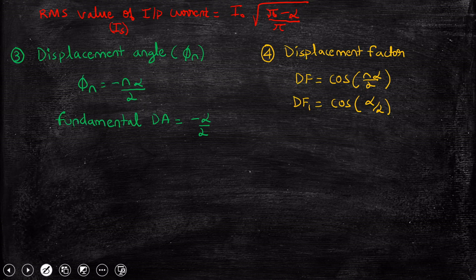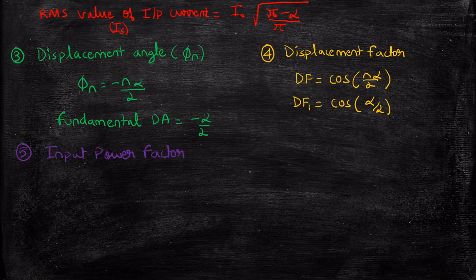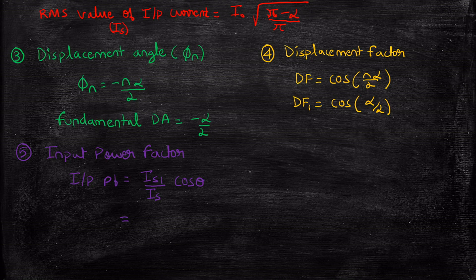Next is the input power factor. By definition, input power factor = (I_s1 / I_s) · cos(θ), where θ is the displacement angle. Substituting the expressions for I_s1 and I_s, and cos(α/2) for the displacement factor, you get: PF = (2√2 · cos²(α/2)) / √(π · (π − α)).